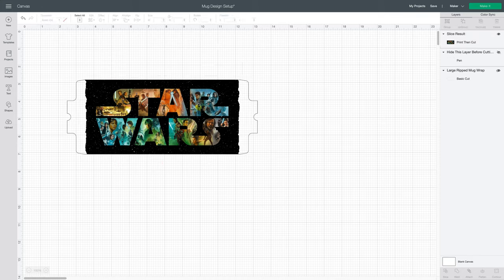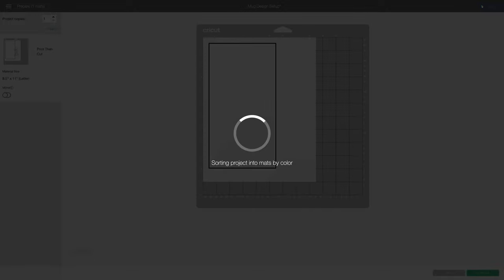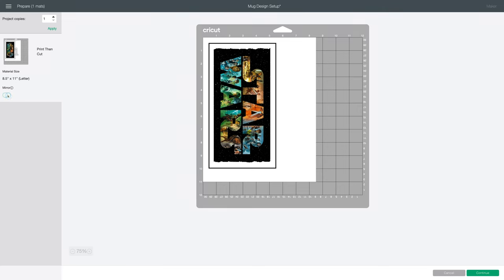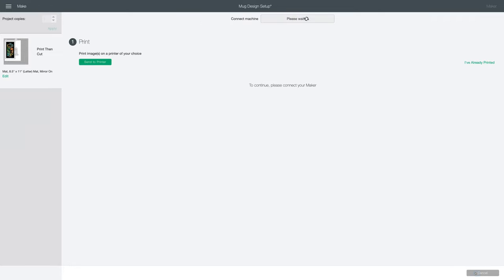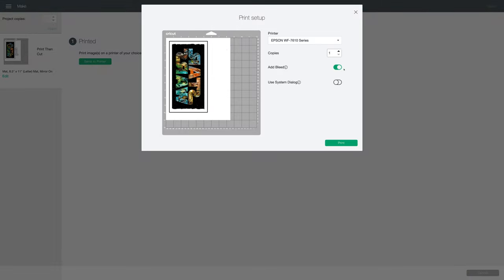I'll go back to my layers panel and turn off those two. Hide this layer and large ripped mug wrap. I'll click make it. I'll turn on mirror and click continue. I'm going to choose send to printer. You can leave bleed on because for this ripped edge I want to cut it out with my maker. Make sure that I've selected my sublimation printer and use system dialog and click print.